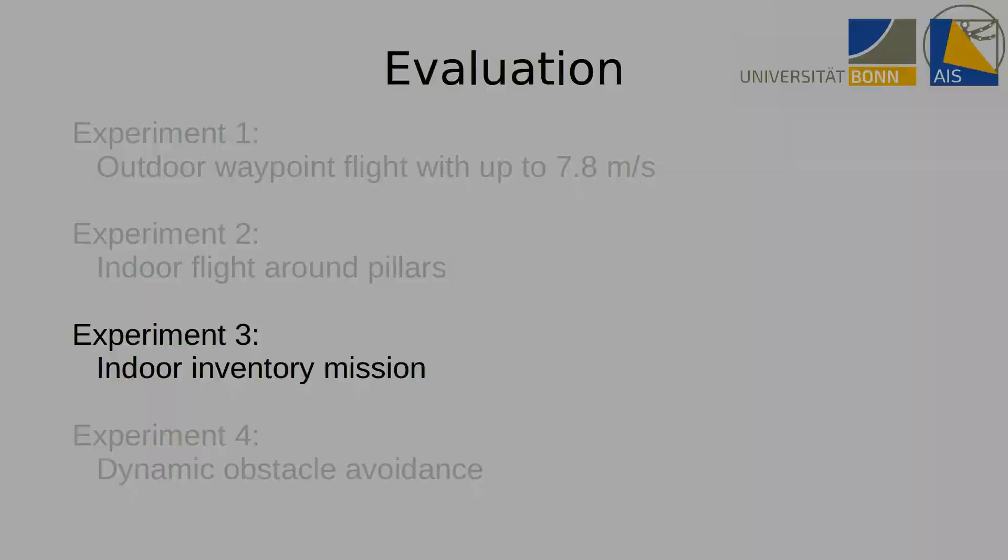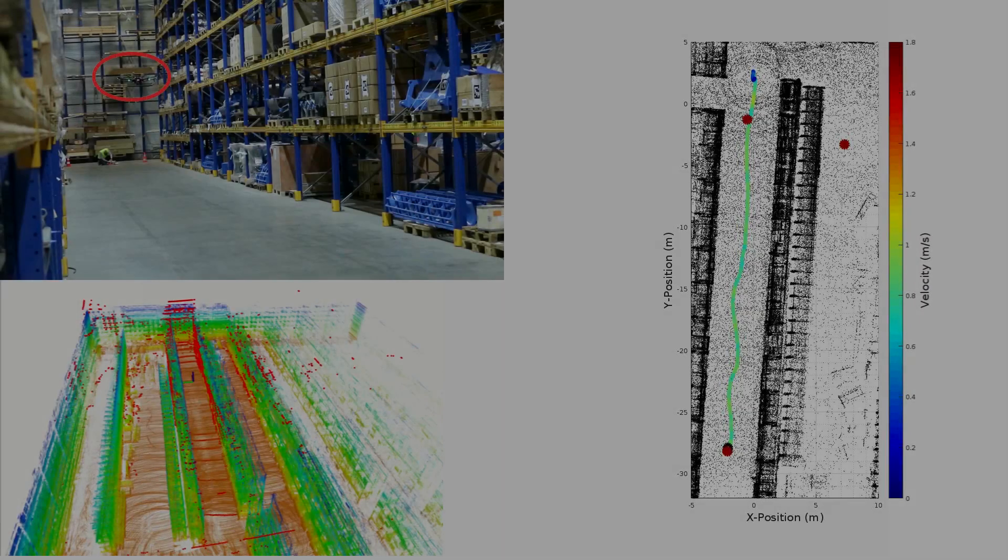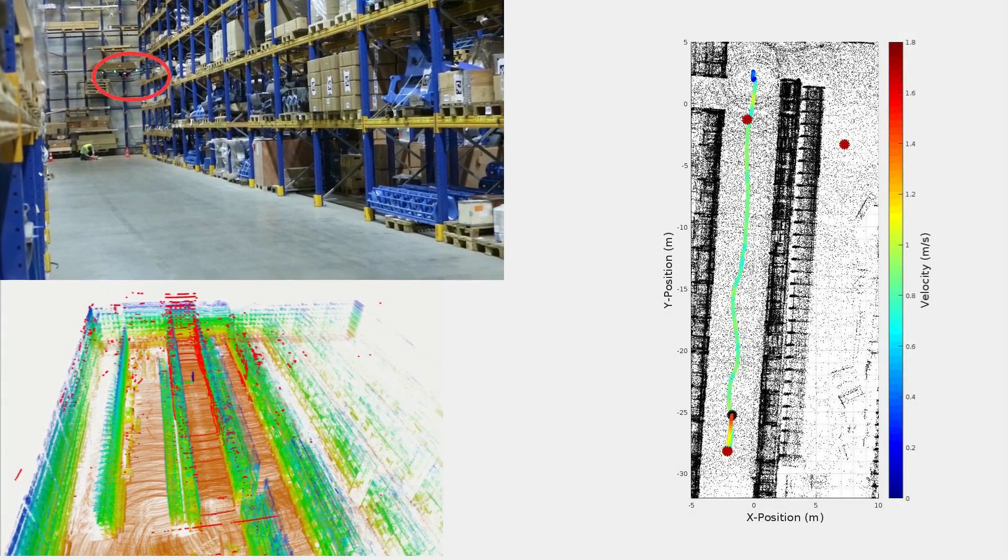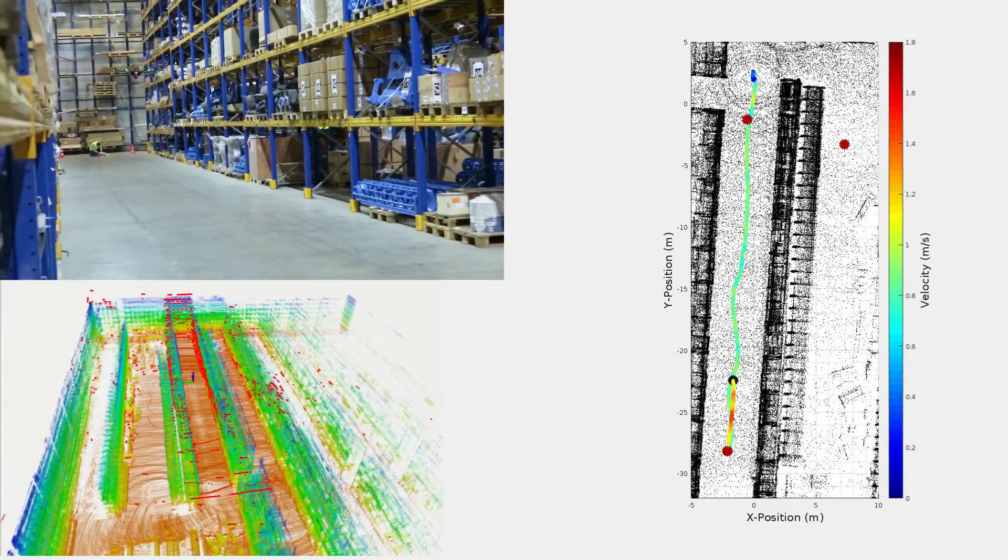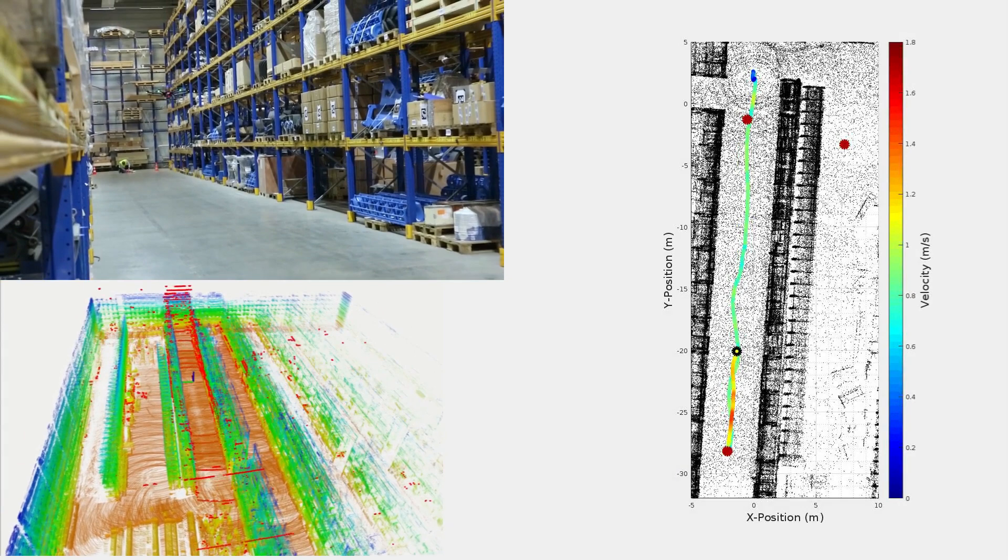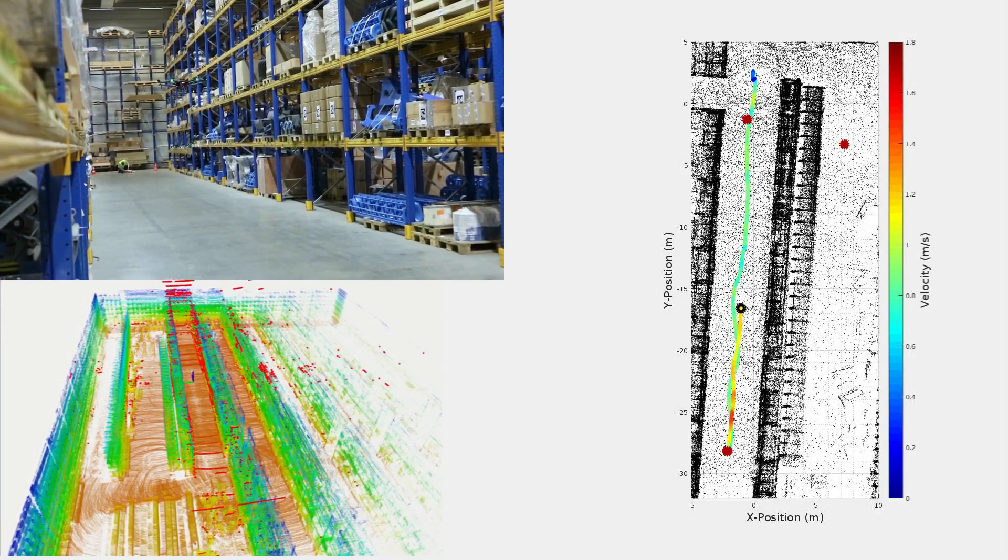In a third experiment, our integrated system is demonstrated in a warehouse. A mission containing the complete inventory of one shelf row and the inspection of a single storage unit in another row was specified in the warehouse management system.